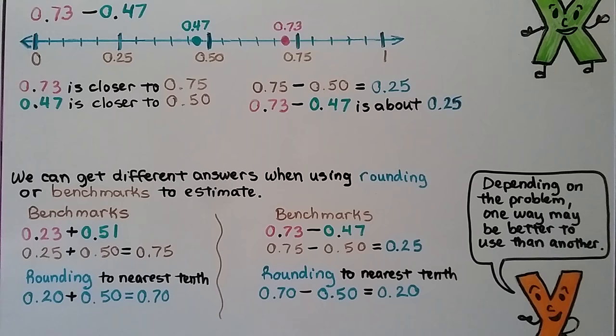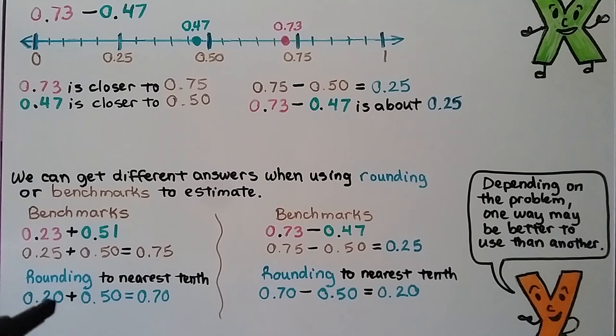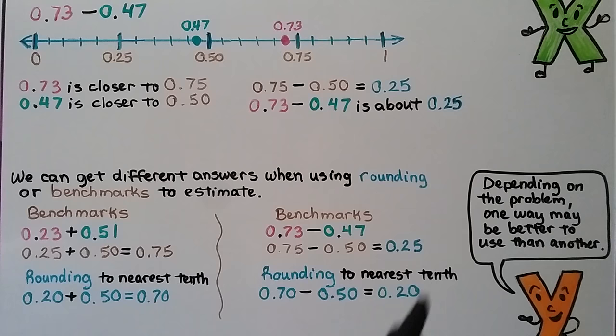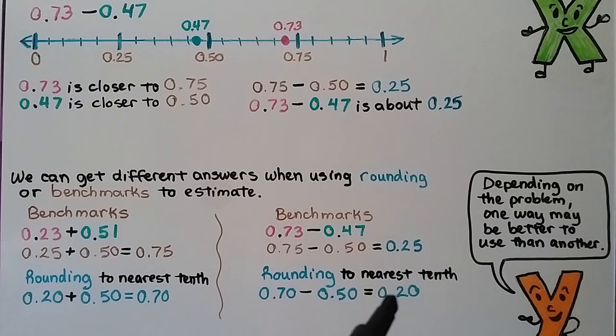We can get different answers when using rounding or benchmarks to estimate. For the earlier addition problem, using a benchmark gave about 75 hundredths. But when we round to the nearest tenth, the 3 tells the 2 to stay the same giving 20 hundredths, and the 1 tells the 5 to stay the same giving 50 hundredths — adding gives 70 hundredths. For the subtraction problem, the benchmark gave 25 hundredths, but rounding to the nearest tenth gives 70 hundredths minus 50 hundredths, which is 20 hundredths. So depending on the problem, one method may be better to use than another.